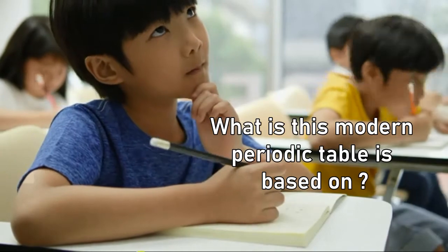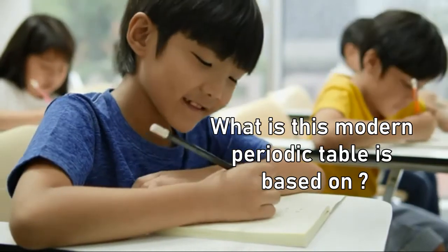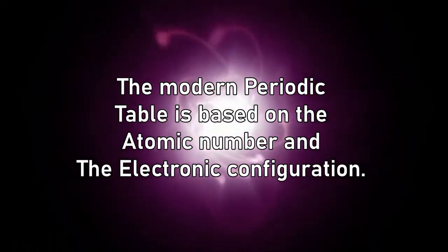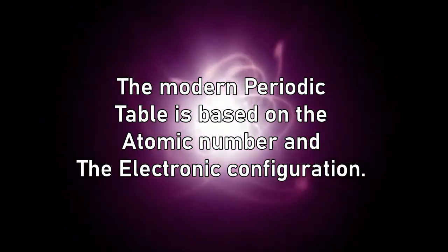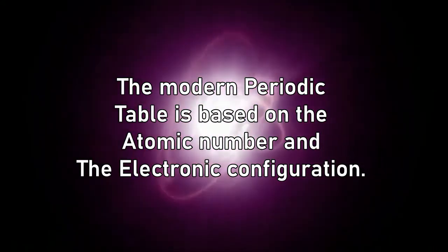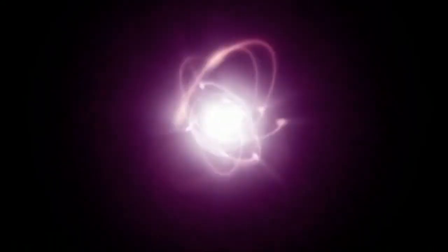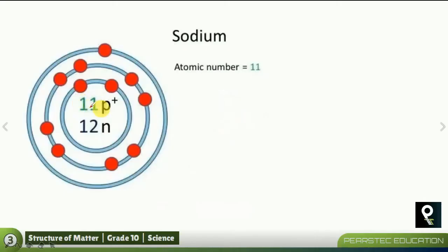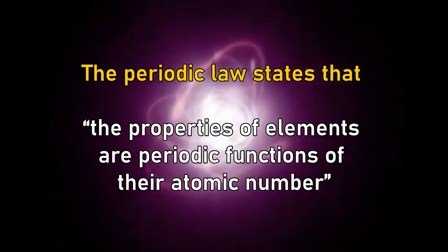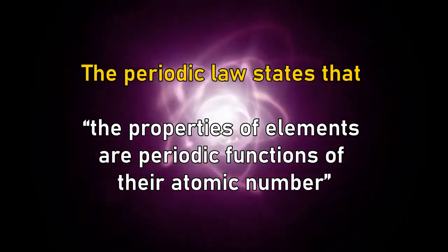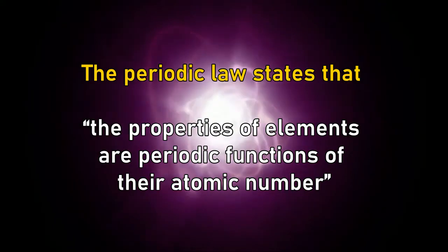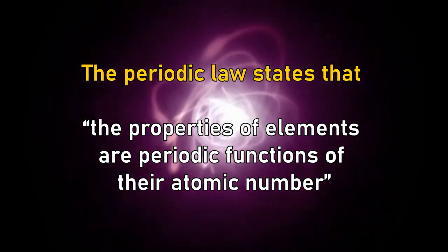What is the modern periodic table based on? The modern periodic table is based on the atomic number and the electronic configuration. We already know what atomic number and electronic configurations are, don't we? The periodic law states that the properties of elements are periodic functions of their atomic number.